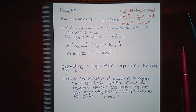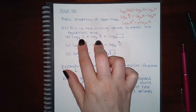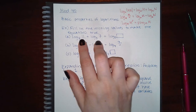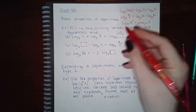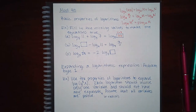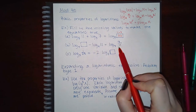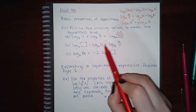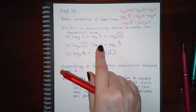We're going to use those properties to fill in this example. It says: fill in the missing values to make the equations true. Notice that they're adding the two separate logs together — when you do that, you need to multiply their arguments. So here we should have 11 times 7, which is 77. So 77 is what would go inside the box. Here they're subtracting, which means you're going to end up with a fraction — they already have 11 at the bottom, so you're missing the 9 that goes at the top.